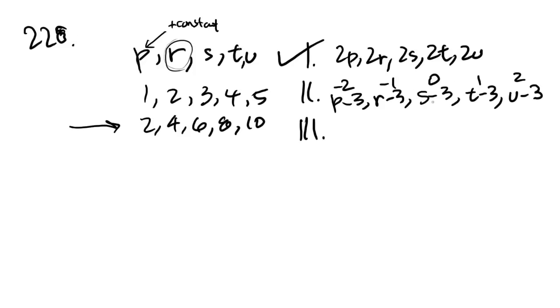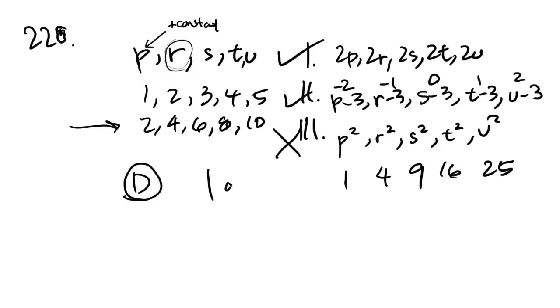Number 3 says P squared, R squared, S squared, T squared, U squared. This would not be true. The reason is, if we plugged in these numbers, 1, 2, 3, 4, 5, we get 1, 4, 9, 16, and 25. And 4 minus 1 is 3. 9 minus 4 is 5. Not a constant. So your answer will be D, which is 1 and 2.